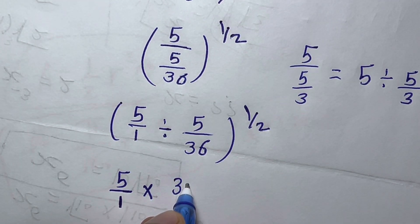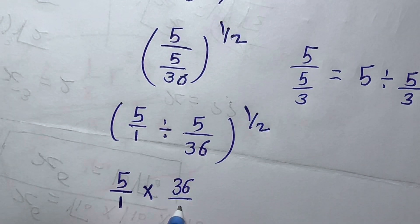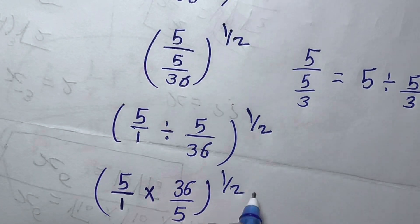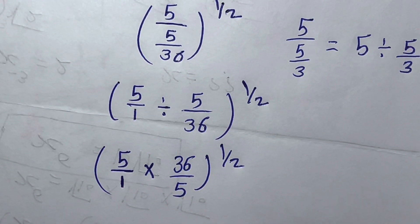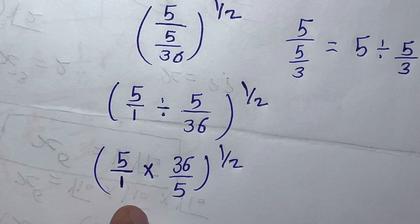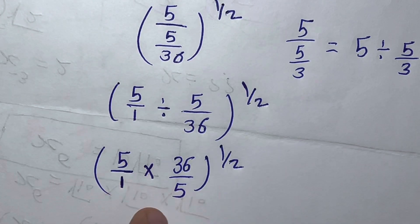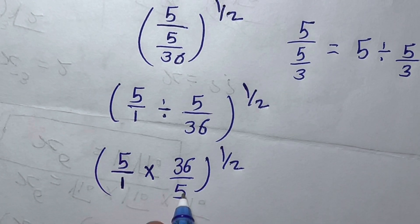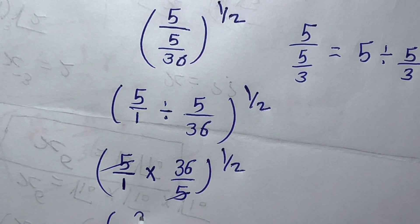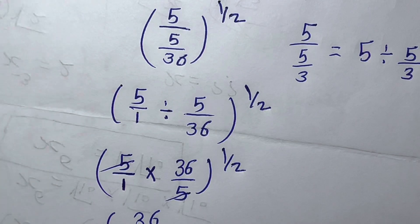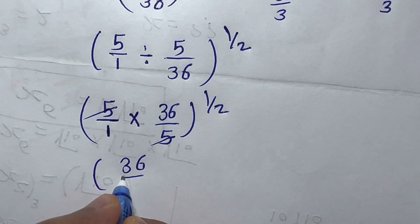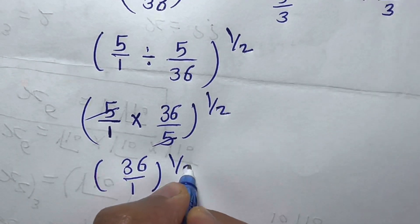After flipping, it becomes five times 36 over five, all raised to the power of one over two. We can cancel the five in the numerator with the five in the denominator, leaving 36 over one, raised to the power of one over two.